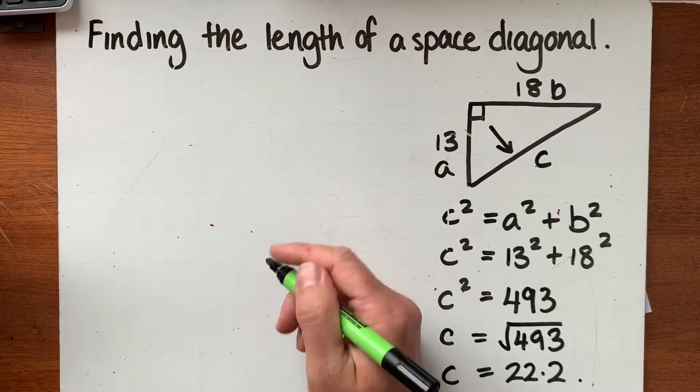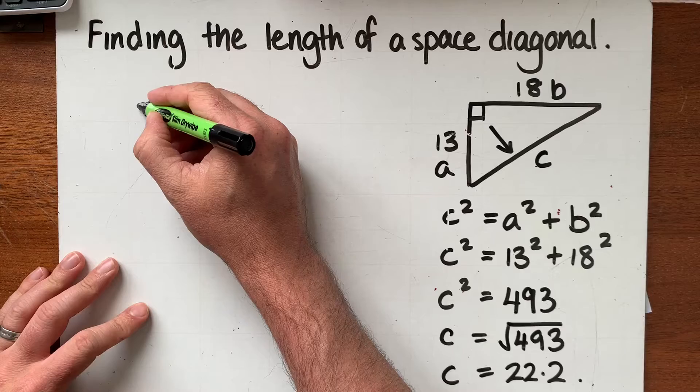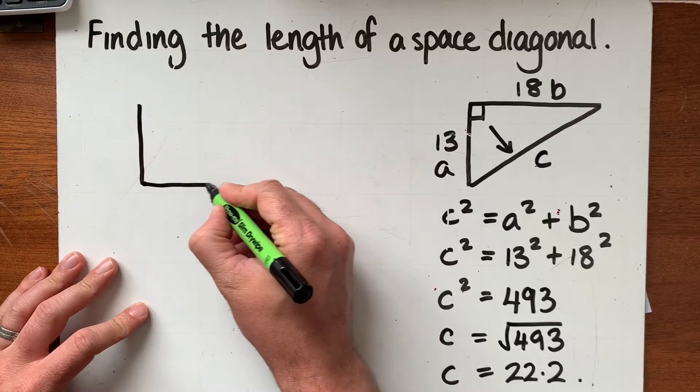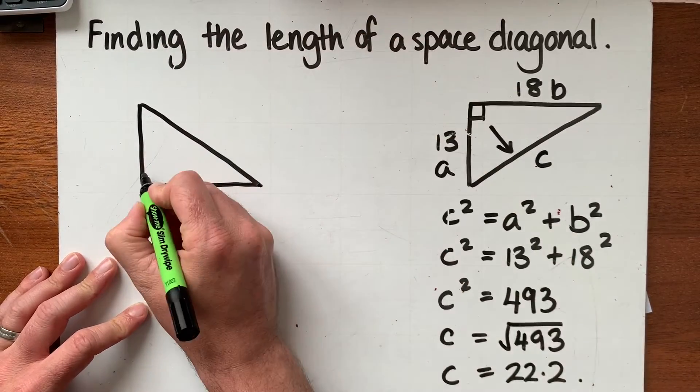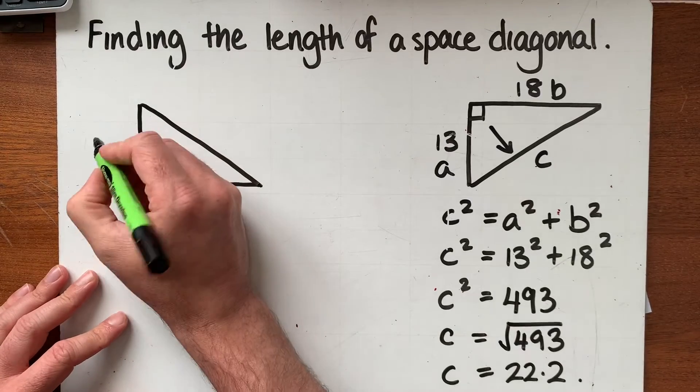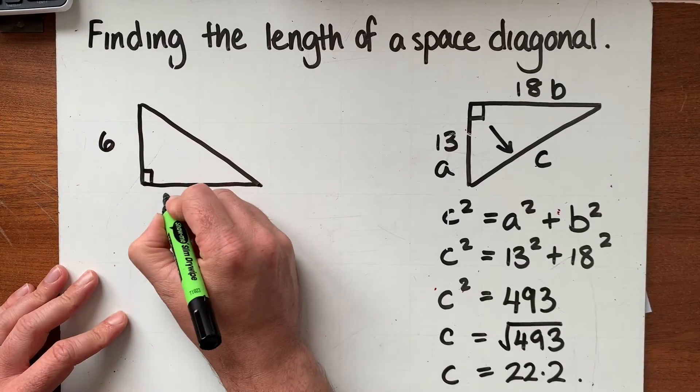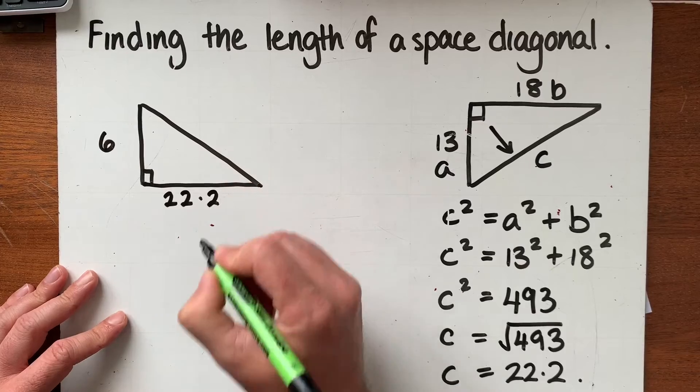So now I'm going to try and draw that triangle out a little bit more complicated but essentially looks like this, where we've got our right angle we've got the height as 6 and we've now got the base which is 22.2.